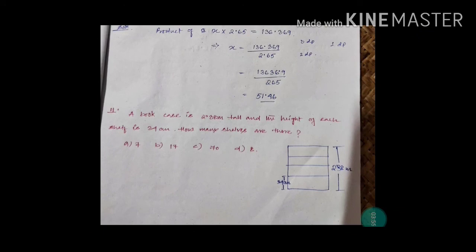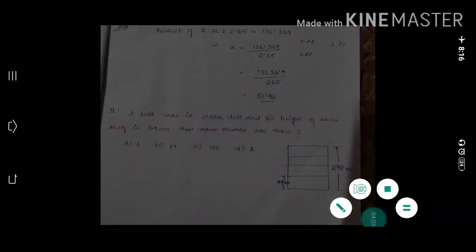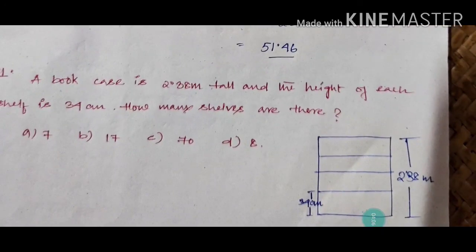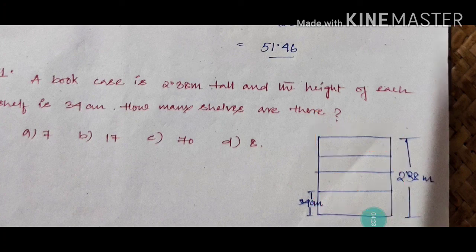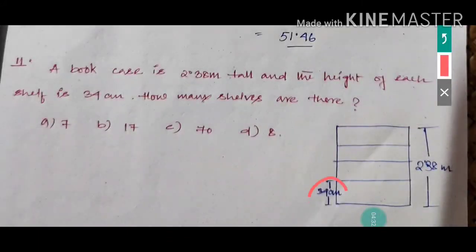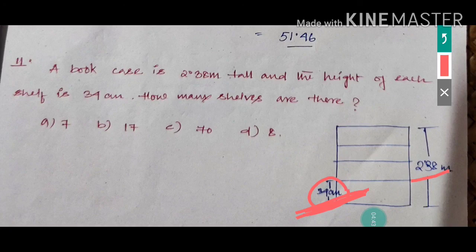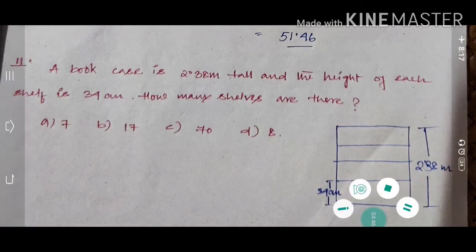Question 11: a bookcase is 2.38 meters tall and the height of each shelf is 34 centimeters. How many shelves are there? You need to divide 2.38 by 34 centimeters — but the units are different: one is in meters, the other in centimeters. This is the main trick in this question. First convert centimeters to meters, or convert meters to centimeters, then do the division.